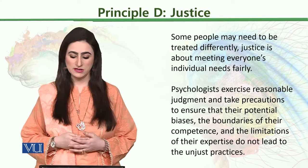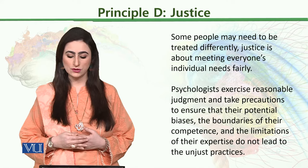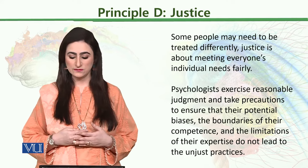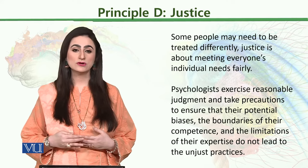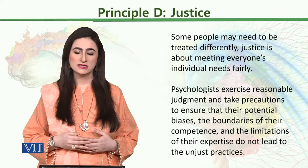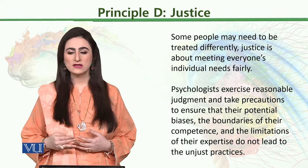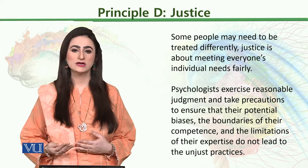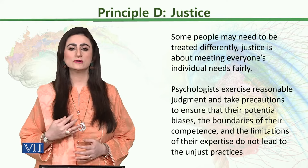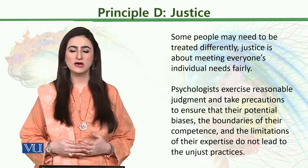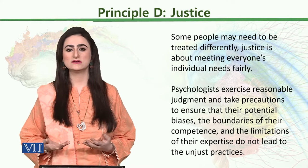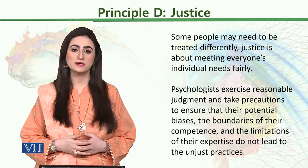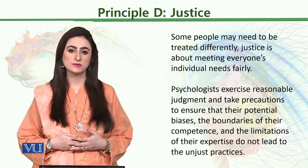Psychologists exercise reasonable judgment and take precautions to ensure that their potential biases, the boundaries of their competence, and the limitations of their expertise do not lead to unjust practice. For example, if a psychologist has a bleeding disorder, they may be overly compassionate toward patients with thalassemia and hemophilia, and when conducting research, that compassion may falsify or fabricate their findings.